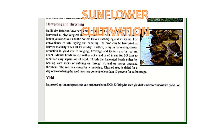Sunflower crop matures in 125 to 135 days. Sunflower can be harvested at physiological maturity when the back of the head turns to lemon yellow color and the bottom leaves start drying and withering. For convenience of safe drying and handling, the crop can be harvested at harvest maturity when all leaves dry. Further delay in harvesting causes reduction in yield due to lodging, breakage, and termite and red-end attack. Mature heads are cut and dried in sun for two to three days to facilitate easy separation of seed.